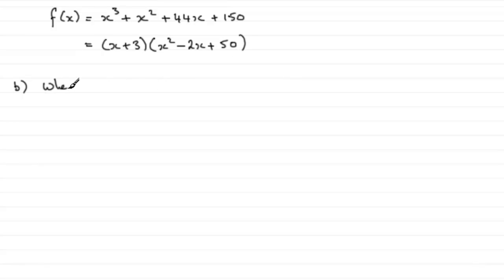So when f of x equals zero, what are those roots going to be? Well clearly we've got x plus 3 multiplied by x squared minus 2x plus 50, that's going to equal zero.